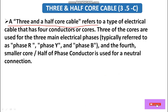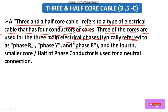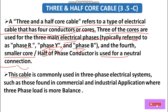Now, three and half core cable. A three and half core cable has four conductors. Three of the cores are for the three main electrical phases — R, Y, and B. The fourth conductor is smaller — half the diameter of the phase conductors — and is used for the neutral connection. This cable is commonly used in three-phase commercial and industrial systems.